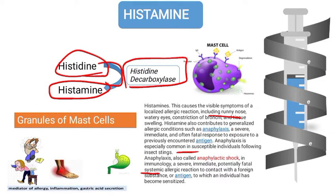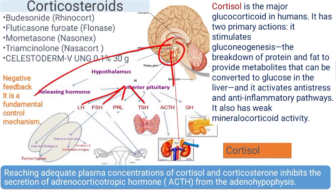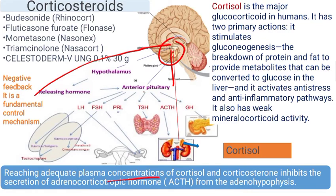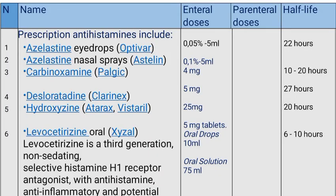Anaphylaxis, also called anaphylactic shock, is a severe, immediate, potentially fatal systemic allergic reaction to contact with a foreign substance or antigen to which an individual has become sensitized. Corticosteroids work via a negative feedback mechanism. The anterior pituitary produces hormones like luteinizing hormone, follicle stimulating hormone, prolactin, thyroid stimulating hormone, adrenocorticotropic hormone, and growth hormone, all of which have negative feedback mechanisms. For example, reaching adequate plasma concentration of cortisol causes corticosteroids to inhibit the secretion of adrenocorticotropic hormone from the anterior pituitary.